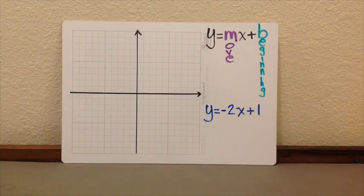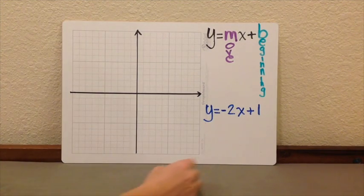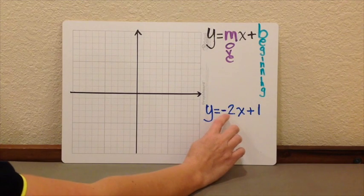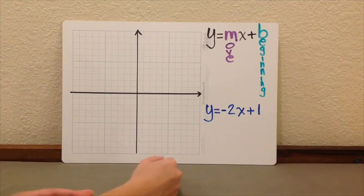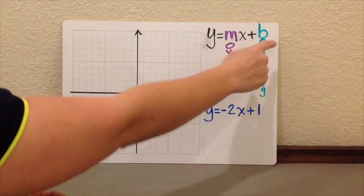Right now, what we are going to do is try to graph our equation y equals negative 2x plus 1. If you look at our equation, it's already in the slope-intercept form.